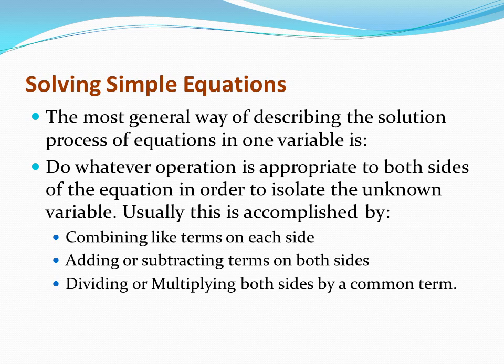Solving simple equations. The most general way of describing the solution process of equations in one variable is: do whatever operation is appropriate to both sides of the equation in order to isolate the unknown variable. Usually this is accomplished by combining like terms on each side, adding or subtracting terms on both sides, and dividing or multiplying both sides by a common term.